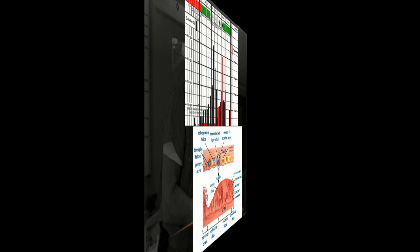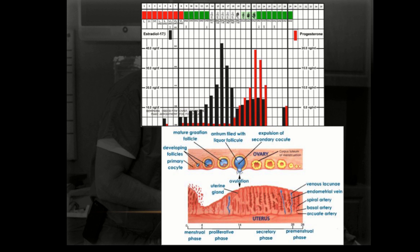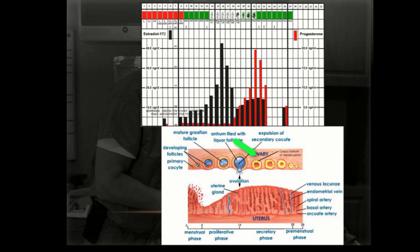So let's put both graphs together. We see estrogen rising as the follicle increases in size. As estrogen rises, the lining of the uterus — the endometrium — thickens, ovulation occurs, the corpus luteum is formed, and after that, progesterone rises in the luteal phase.